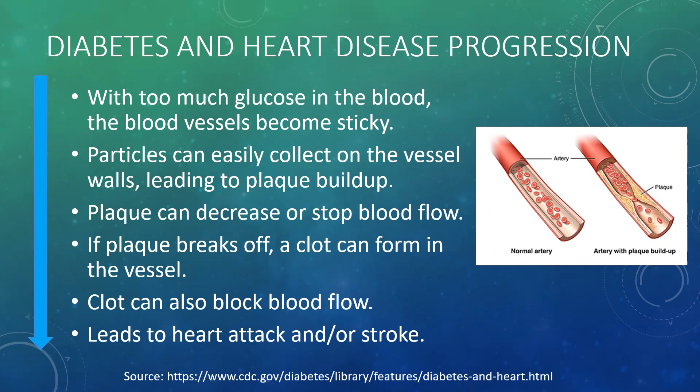When your blood sugar is too high, your blood vessels basically become sticky. Those particles can collect on the blood vessel walls and really lead to a plaque buildup. As the plaque increases, blood flow decreases — there's an inverse relationship there. And if that plaque breaks off, a clot can form in the blood vessel and lead to a stroke or a heart attack. So what we're really trying to do is minimize these plaques, which can break off, trigger a heart attack or stroke. The more often we can keep blood glucose levels within optimal range, the less likely that is to occur.